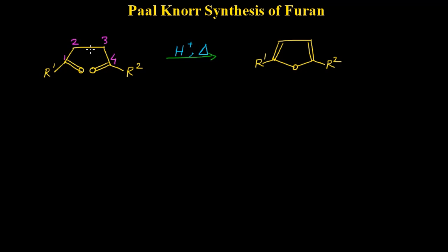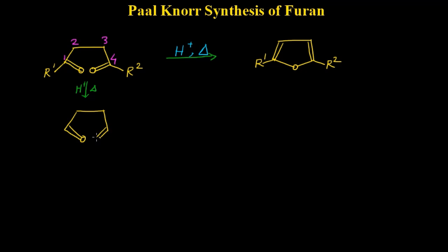When we heat such a compound in presence of an acid such as para-toluenesulfonic acid — we require only a trace amount of acid — this oxygen will absorb a proton. The carbonyl remains as-is and here we get oxygen bonded with this hydrogen.